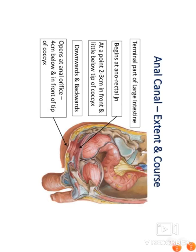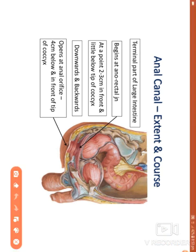The next figure shows the sagittal view of the male pelvis. Here you can see the rectum, the anal canal, and the anal orifice opening to the exterior. The anal orifice lies four centimeters below and in front of the tip of the coccyx. The anal canal begins from the anorectal junction and opens as the anal orifice.